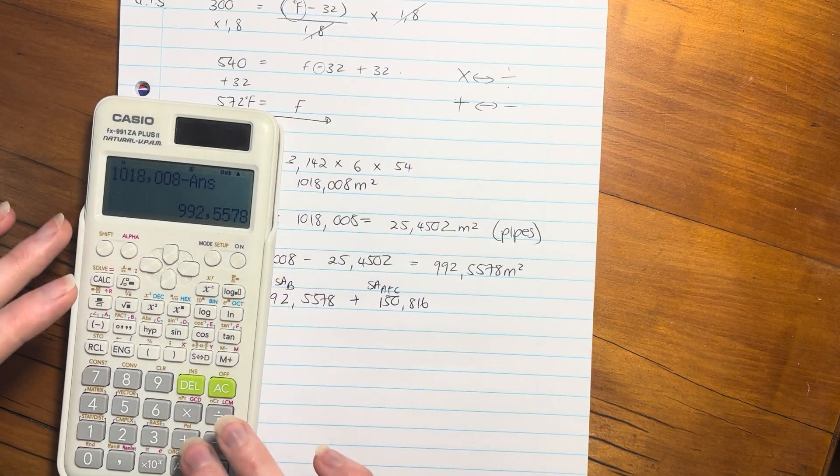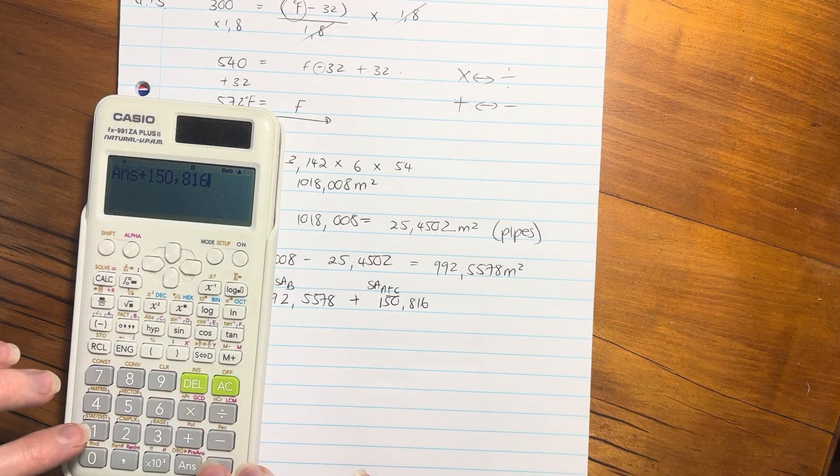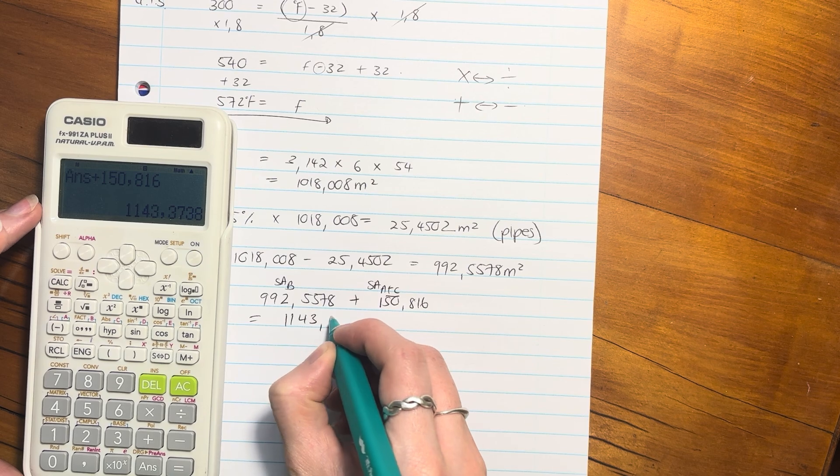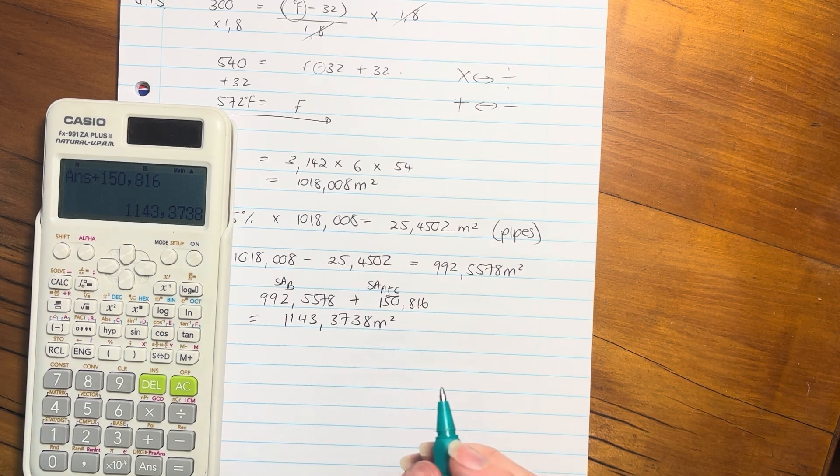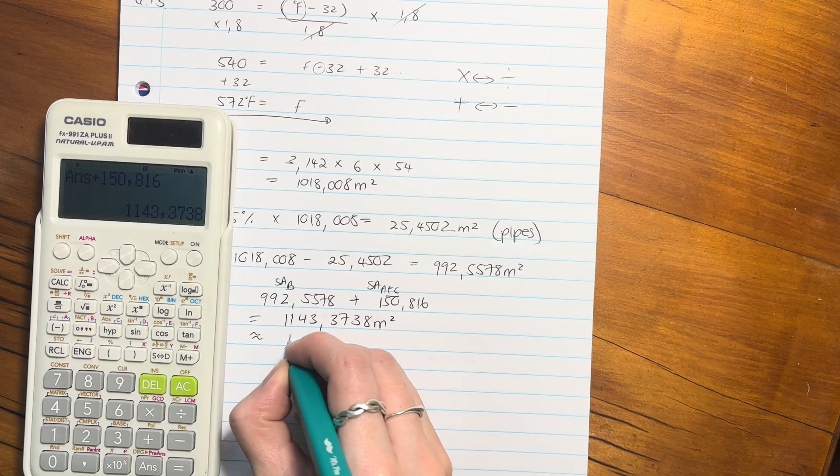Pop that into your calculator. Make sure you type it in correctly. And that's 1,143,3738 meters squared. And then what you can do is you can round that off to two decimal places if you want.